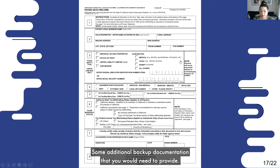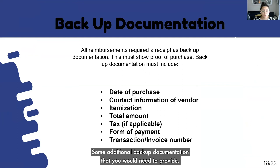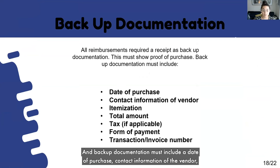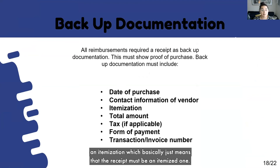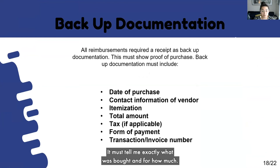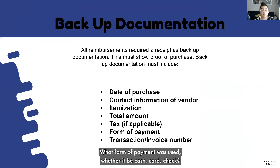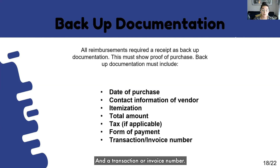Some additional backup documentation you would need to provide: all reimbursements require a receipt as backup documentation showing proof of purchase. Backup documentation must include a date of purchase, contact information of the vendor, and itemization — meaning the receipt must be itemized, telling me exactly what was bought and for how much. Also tax if applicable, what form of payment was used (whether cash, card, or check), and a transaction or invoice number.